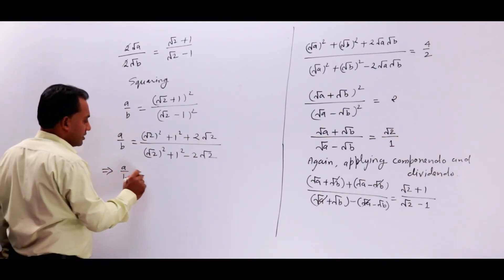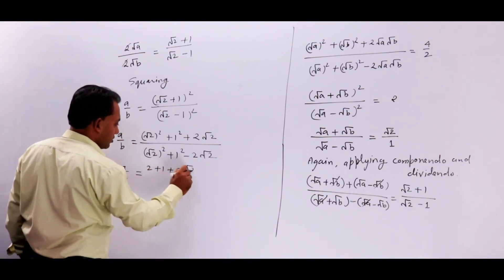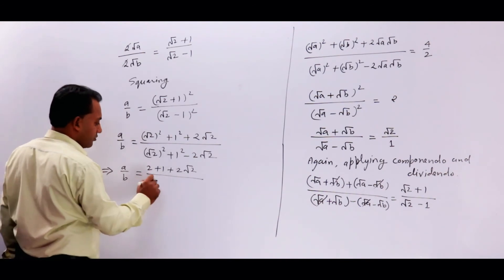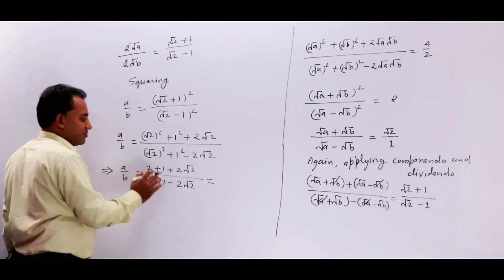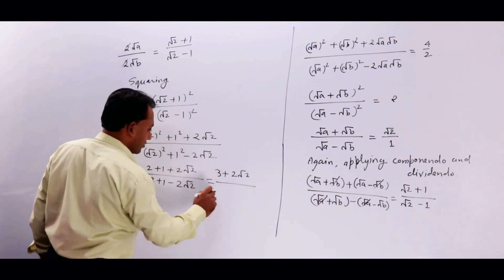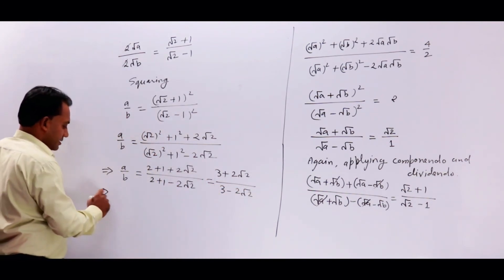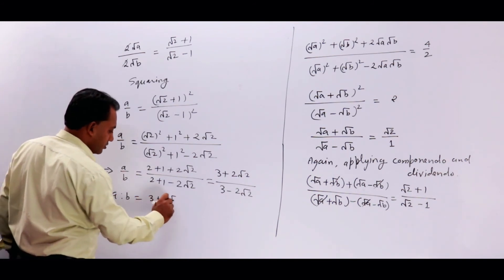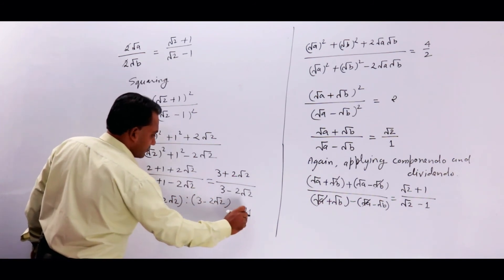Implies A upon B = (2 + 1 + 2√2) upon (2 + 1 − 2√2), तो जाएगा A upon B = (3 + 2√2) upon (3 − 2√2)। Implies A : B = (3 + 2√2) : (3 − 2√2). Hence proved।